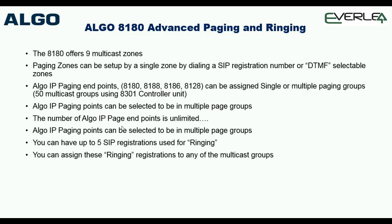Paging zones can be set up in a single zone by dialing a SIP registration number, or as DTMF-selectable. For example, with one master unit you dial the extension number, then star-1 for page group one, star-2 for group two, etc. — using just one SIP registration with post-digits to access multicasting. Or you can have a master for each group and include slaves into the different groups, dialing individual separate registrations on individual masters.